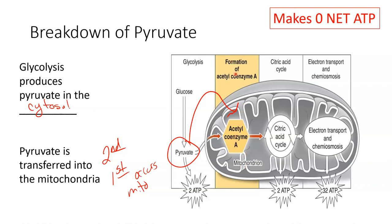This is a great image because it shows pyruvate moving into the mitochondria. We want to keep our language as 'the breakdown of pyruvate' for the second step, rather than 'the formation of acetyl coenzyme A.' You can find different terminology in different sources. So let's look into this step to see what occurs.